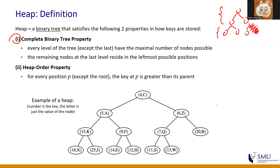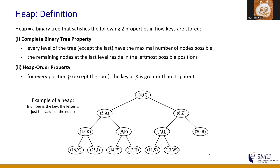This is an example of a complete binary tree — there are two nodes missing, and they are on the rightmost side. So if I remove this node from the middle, this is no longer a complete binary tree. On the other hand, if I remove the rightmost node, this is still a complete binary tree.